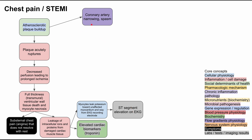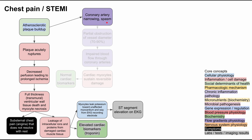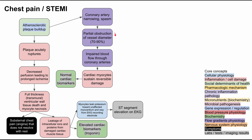Moving to coronary artery narrowing: this happens when plaque takes up space in the lumen of the arteries, causing narrowing which reduces blood flow, and it can also cause vasospasms. With a significant obstruction of the vessel diameter up to 70 to 90 percent, you'll have impaired blood flow through the coronary arteries, and the cardiac myocytes in this case can sustain reversible damage.